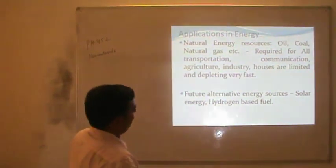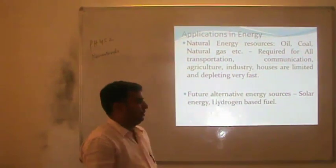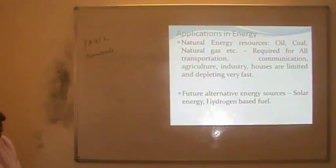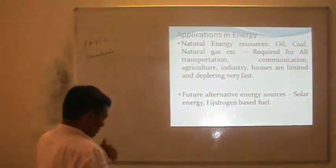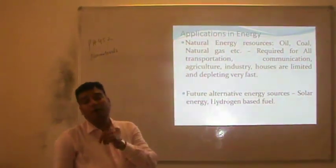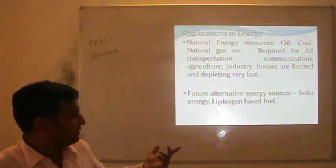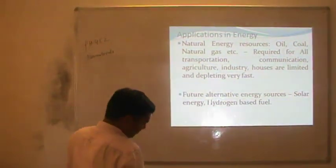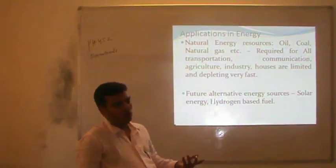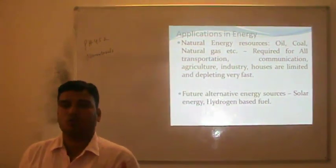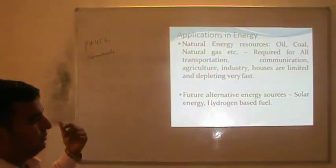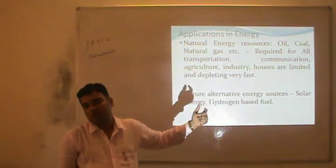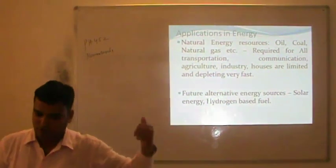The next application is in the field of energy. We generally look for natural resources like oil, coal, and natural gas, but these are exhausting and may be completely exhausted after some time. So we look for more applicative sources of energy — one of them is solar energy. How can we improve the efficiency of solar cells using nanotechnology? That is what we will discuss here.